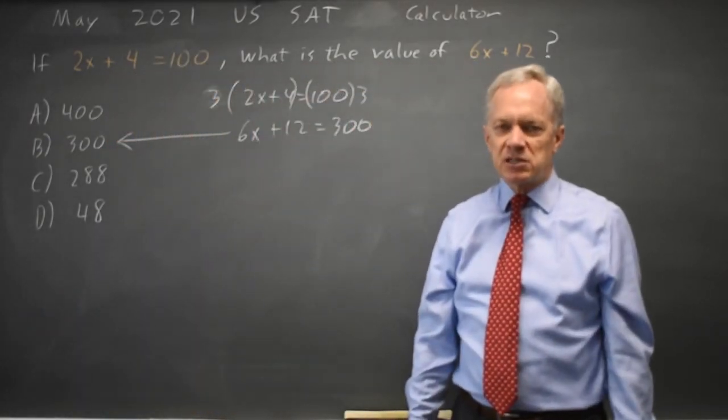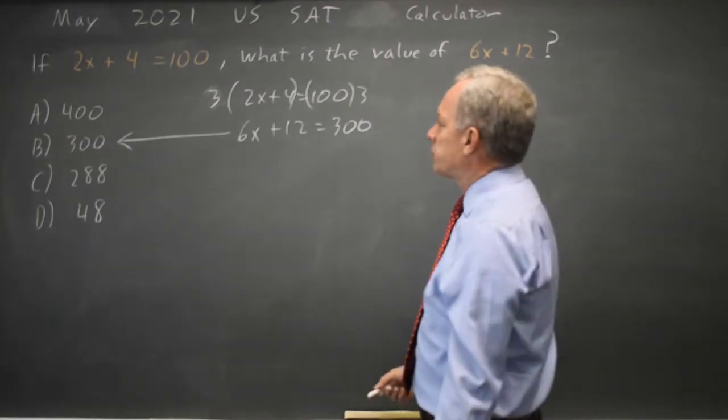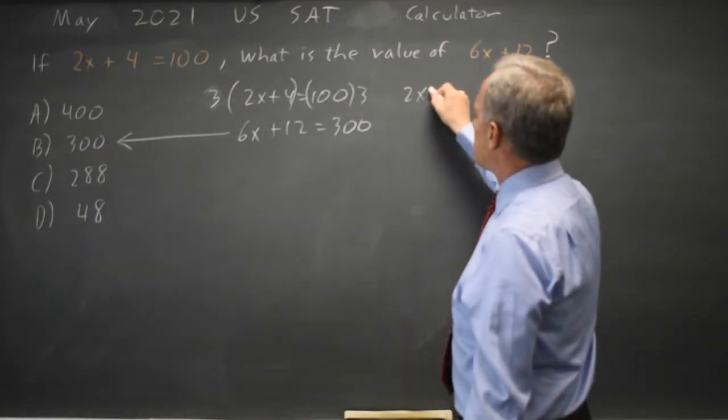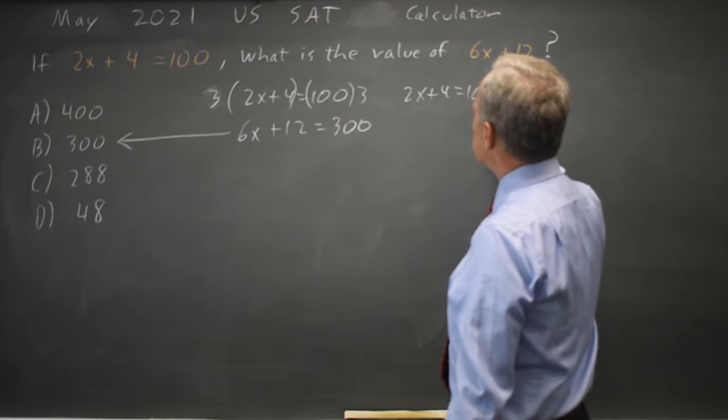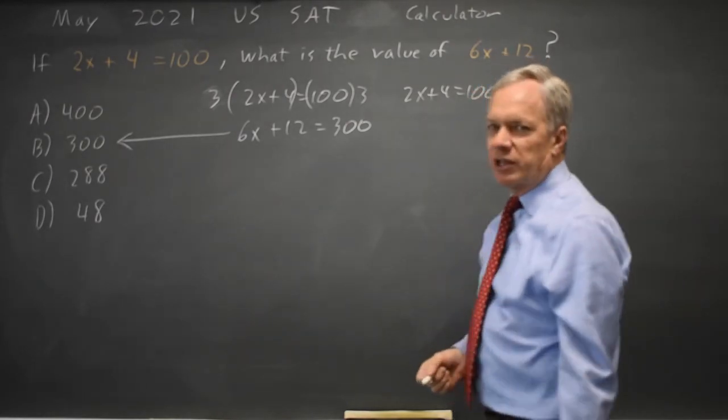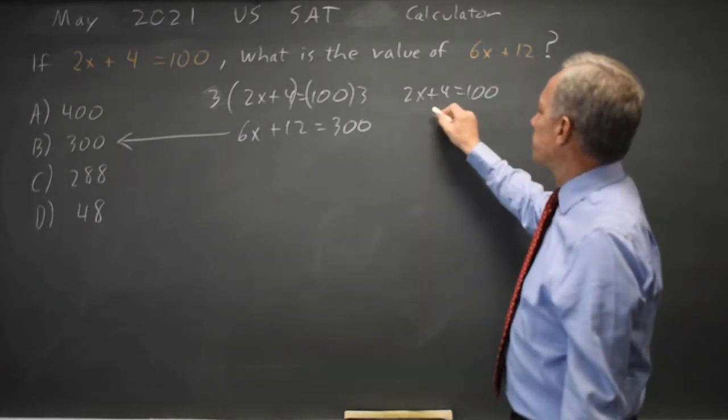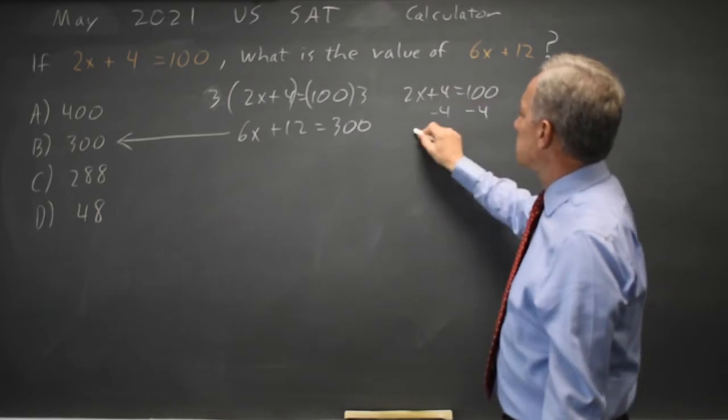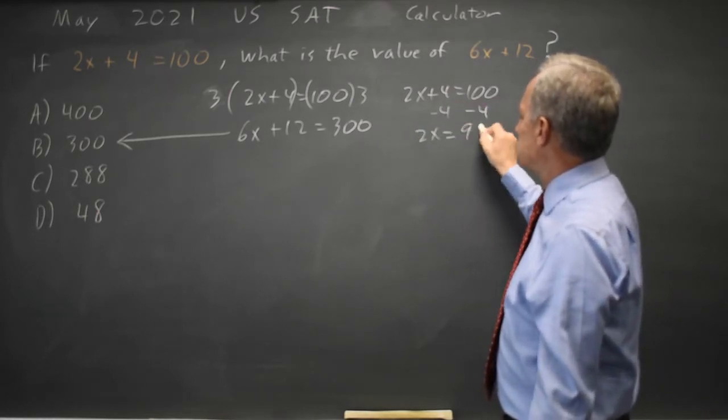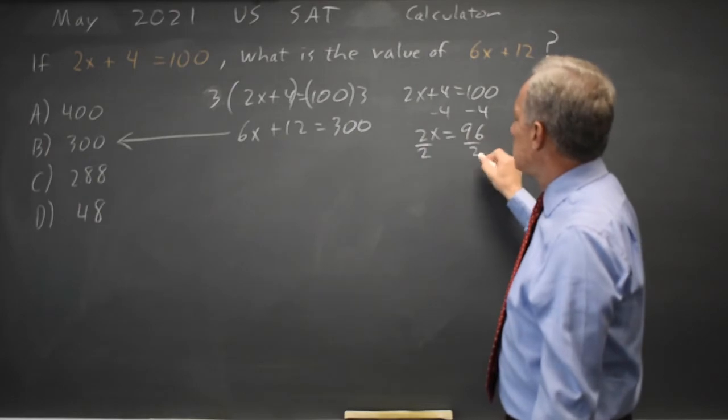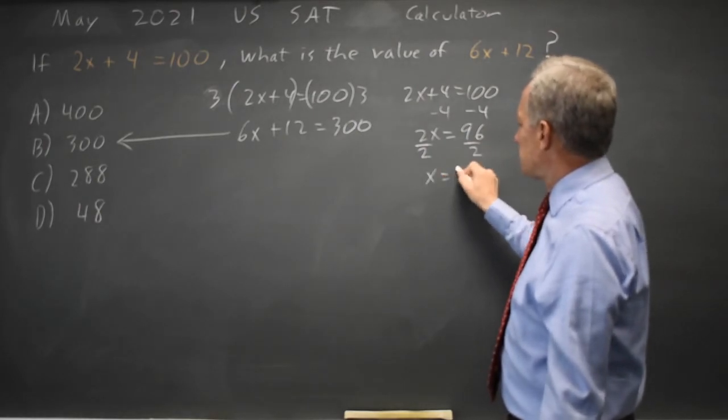If we don't recognize that, that's okay. We can take a more algebraic approach. 2x plus 4 equals 100. I'm going to solve for x and then substitute that x in here. So subtract 4 from both sides. 2x equals 96, divide by 2 to get x by itself, x equals 48.